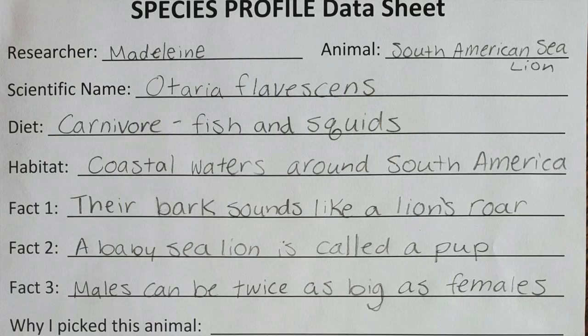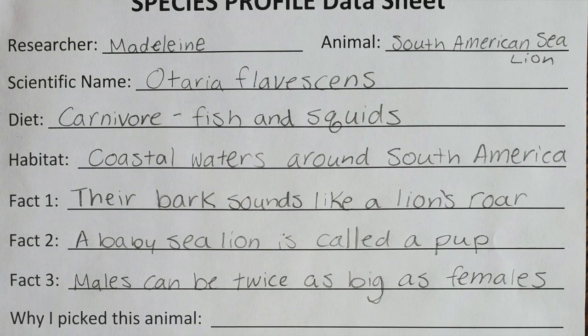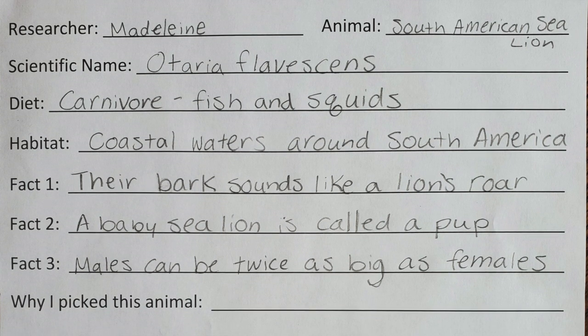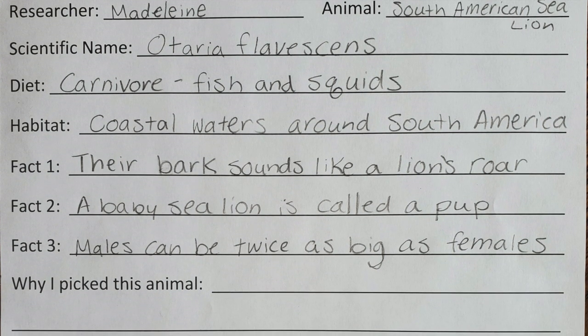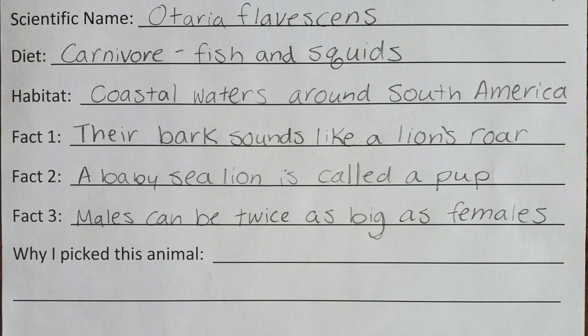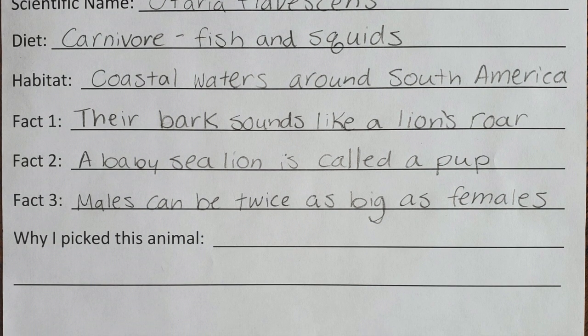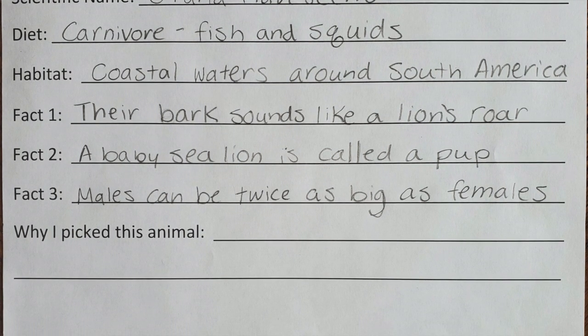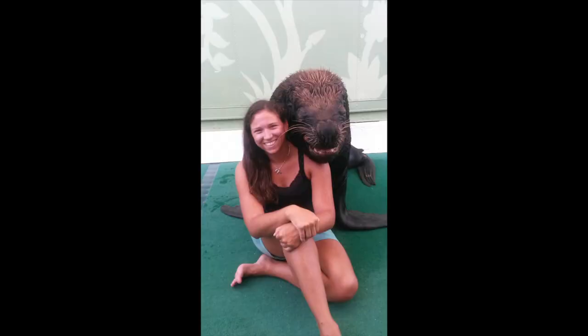It looks like my book has some more information, so I'm going to pick three more facts about South American sea lions that I think are interesting and write those down. A South American sea lion's bark sounds more like a lion's roar than a dog's bark. A sea lion baby is called a pup. And males can grow to be more than twice as big as females. Next, I'm going to write why I picked this animal — I picked it because I used to work with them and I think it's awesome that male sea lions have a huge mane that looks like a lion's mane. I bet that's how sea lions got the name lion.